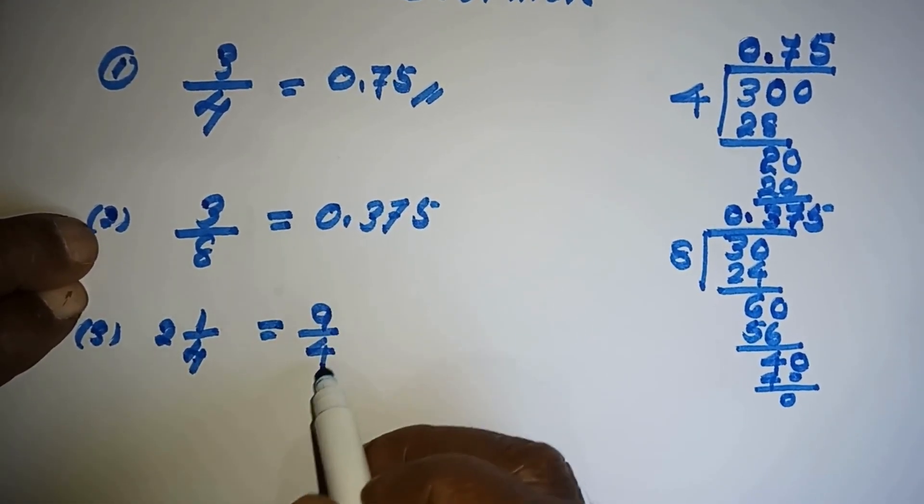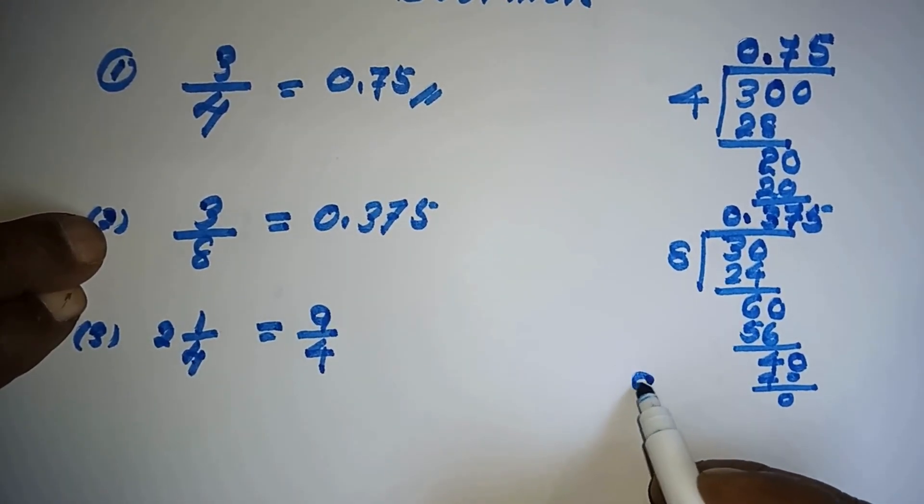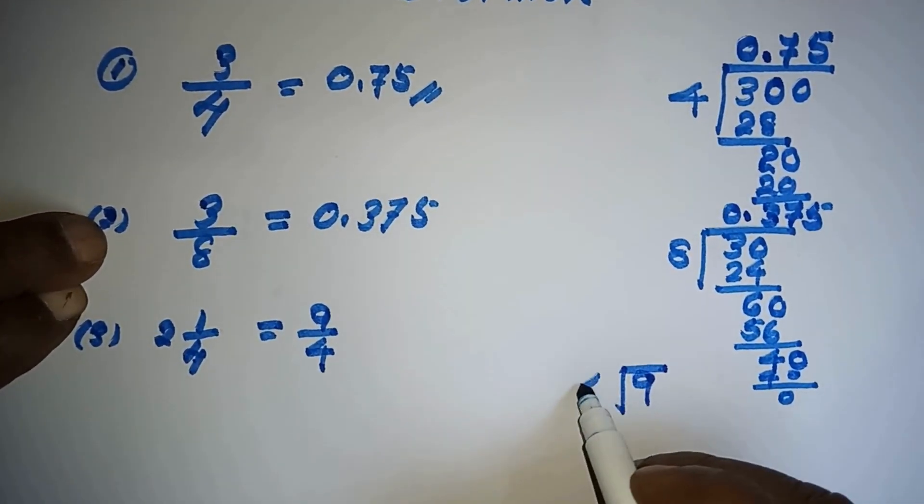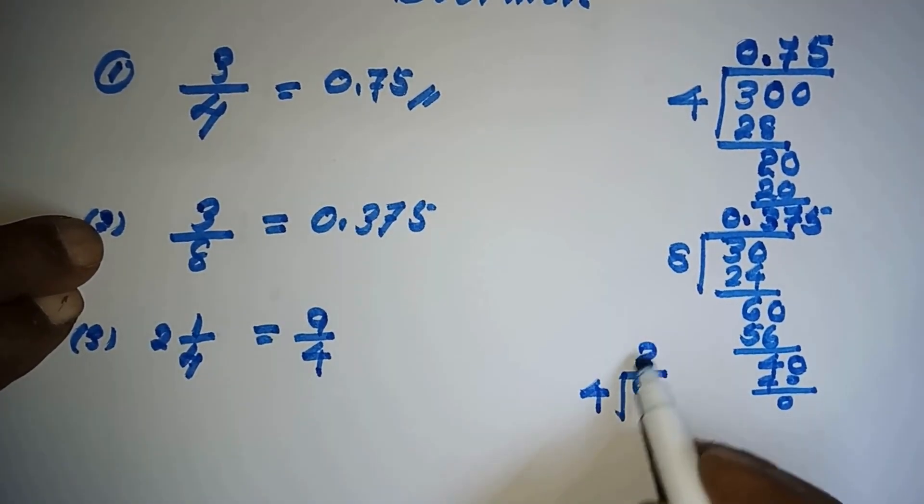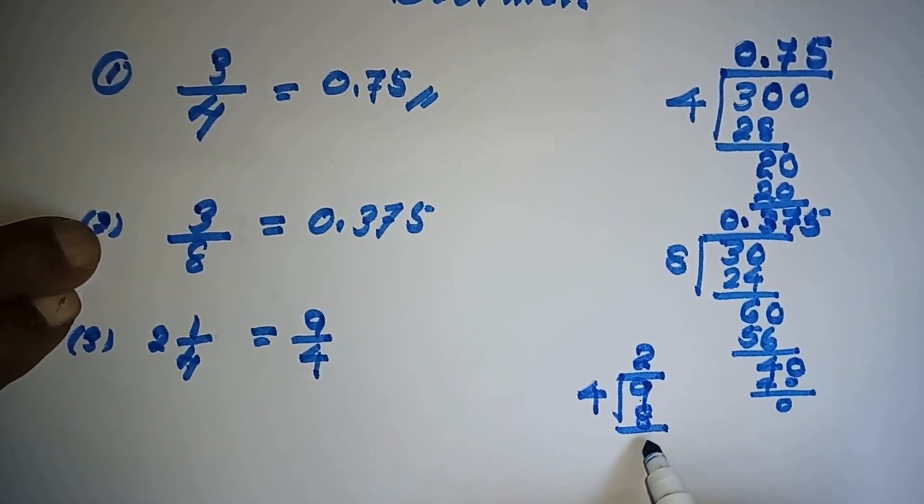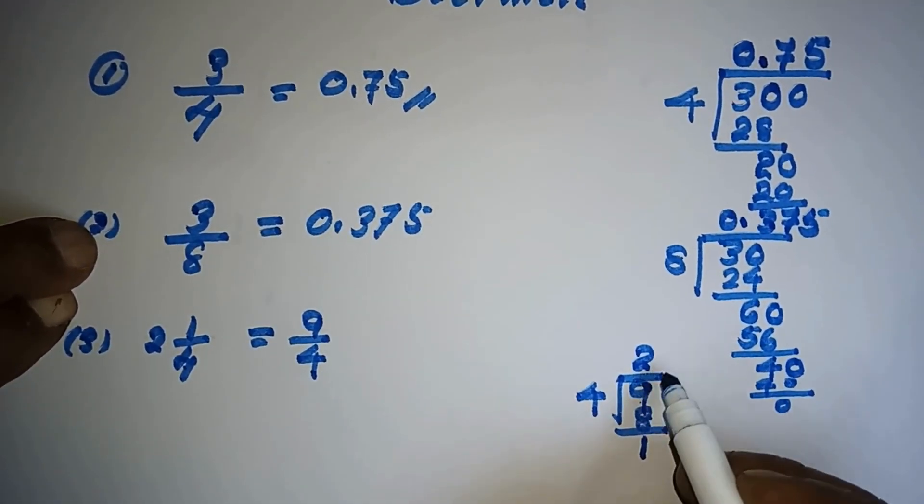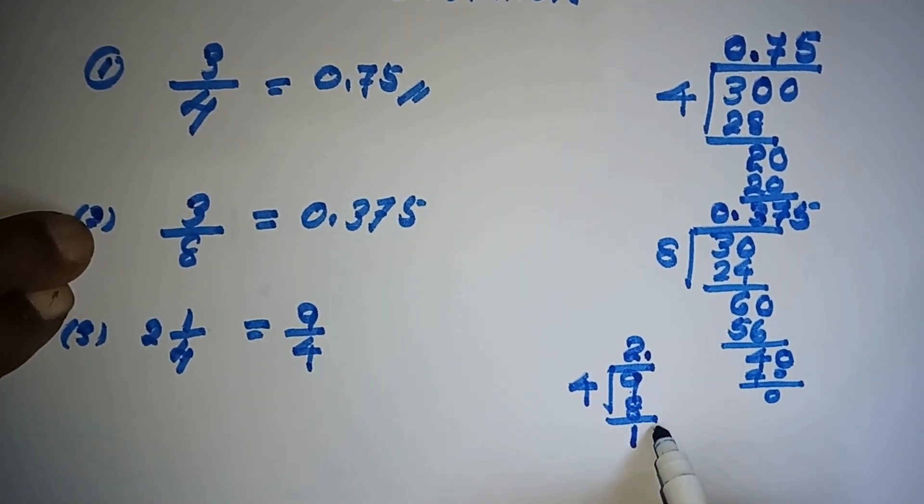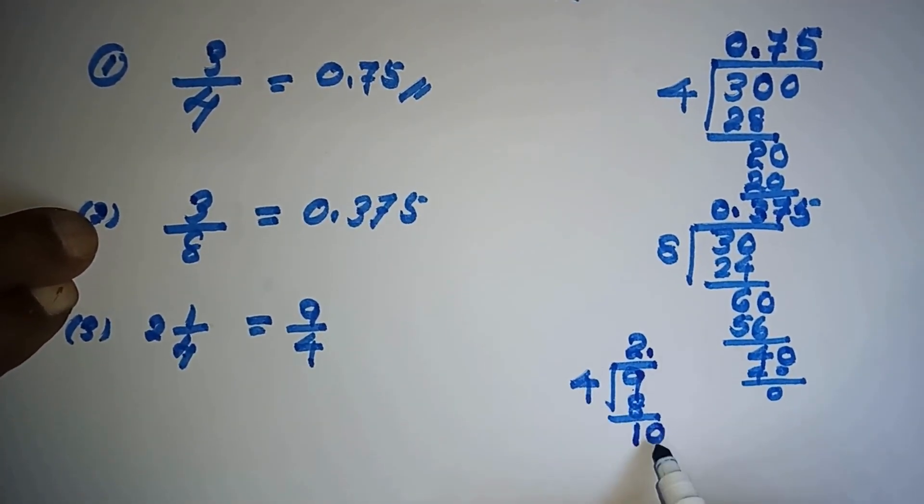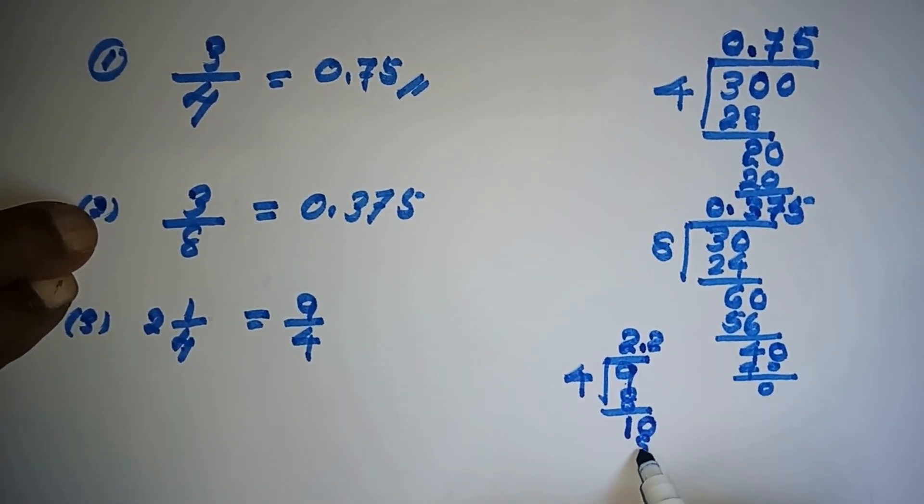Now you have to divide 9 by 4. For 9 it's 2. 4 into 2 is 8, balance is 1. Now decimal starting. Take another 0, then how many 4's are there for 10? It's 2. That is 4 into 2 is 8, 2 is remaining.